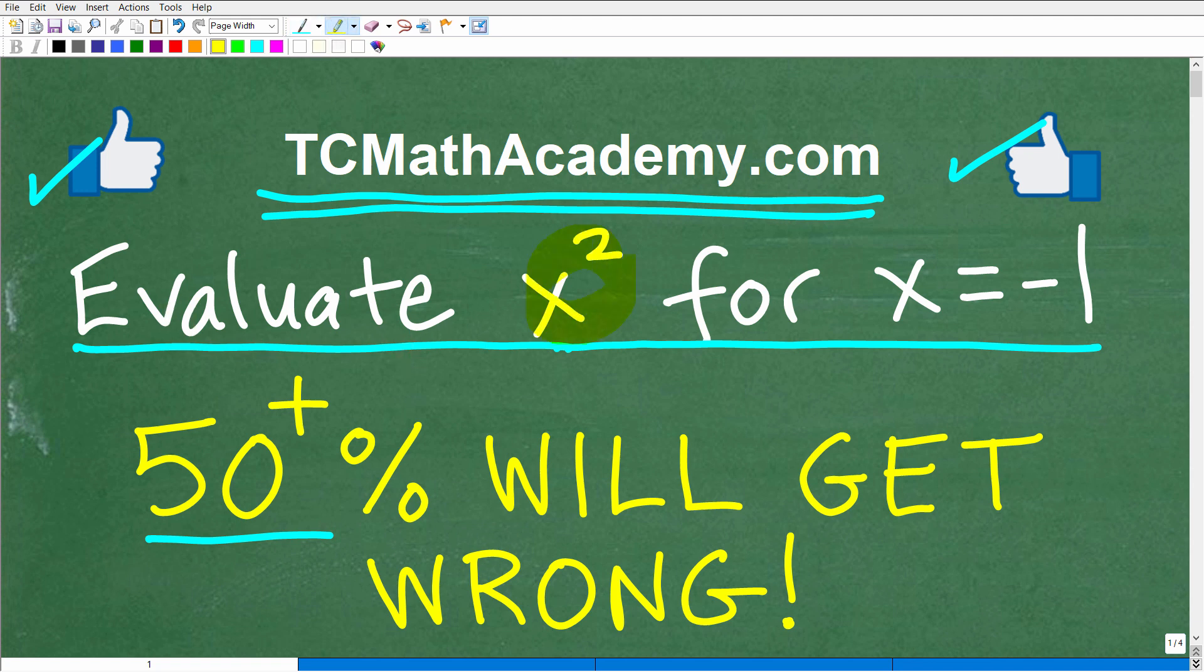Okay, so we want to evaluate x squared for x is equal to negative 1. A pretty easy problem. However, a lot of you are probably going to get this wrong. Hopefully most of you get it right, but let's take a look at the answer.